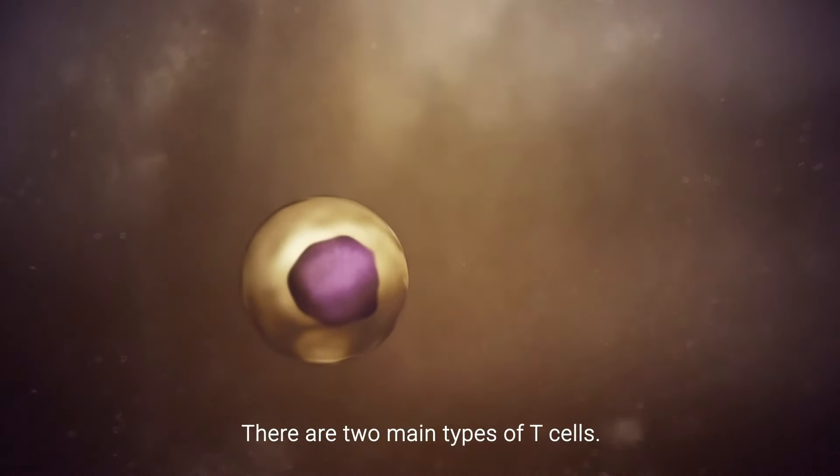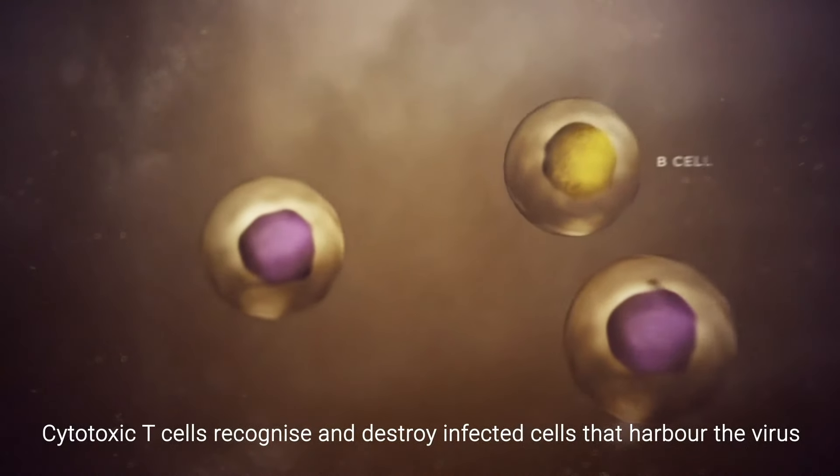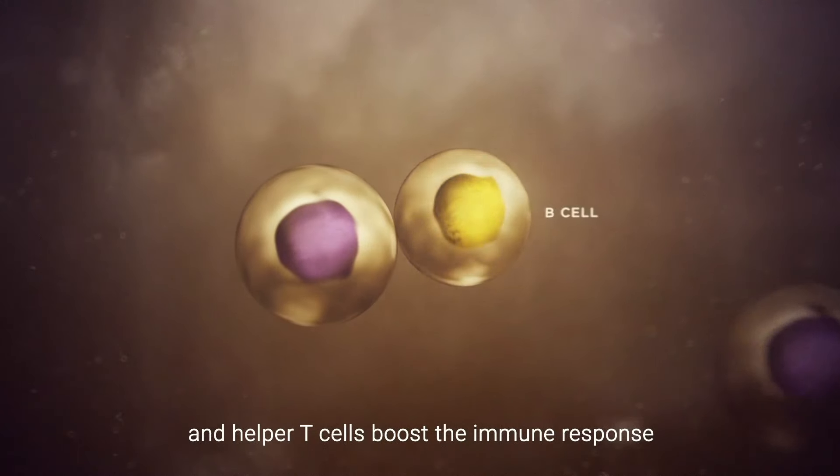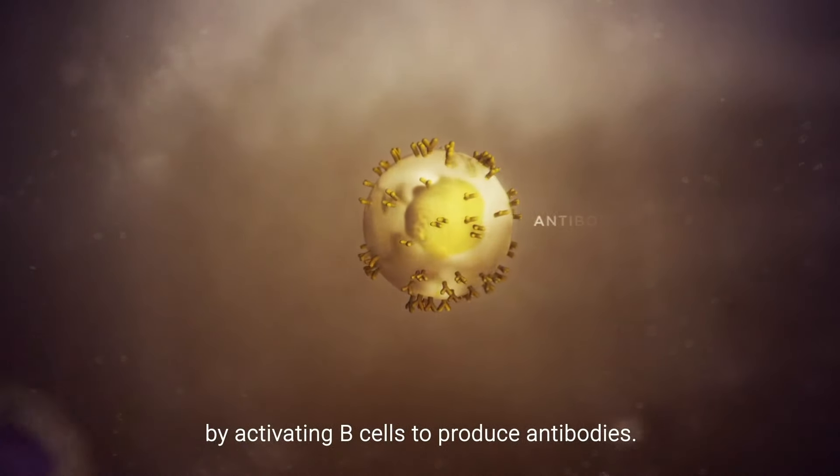There are two main types of T cells. Cytotoxic T cells recognize and destroy infected cells that harbor the virus and helper T cells boost the immune response by activating B cells to produce antibodies.